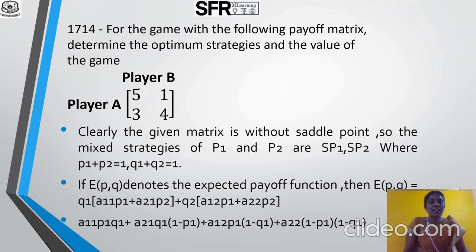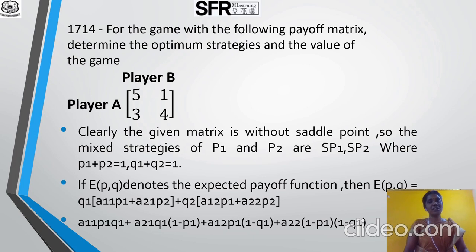Previously we saw games with saddle points. Next we consider games without saddle points. For the game with the following payoff matrix, determine the optimum strategy and the value of the game. Player A, Player B: payoff matrix is 5, 1 / 3, 4. The row minimums are 1 and 3; column maximums are 5 and 4. Maximum of Row Minimum ≠ Minimum of Column Maximum, so the given matrix is without a saddle point. The mixed strategies for P1 and P2 are SP1 and SP2, where P1 + P2 = 1 and Q1 + Q2 = 1.